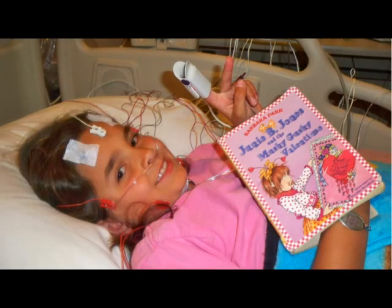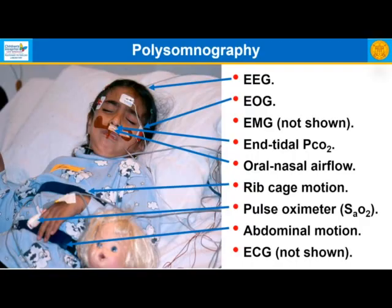We measure the effect of respiration on sleep using polysomnography. Polysomnography includes a number of EEG electrodes — used primarily to determine sleep state — extraocular motion sensors to help with sleep state, EMG at the chin looking at genioglossus muscle activity, end-tidal CO2, oral-nasal airflow, ribcage motion by a band, pulse oximeter, abdominal motion by a band, and electrocardiogram.